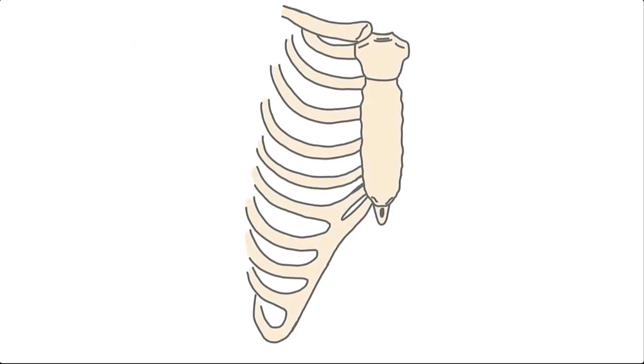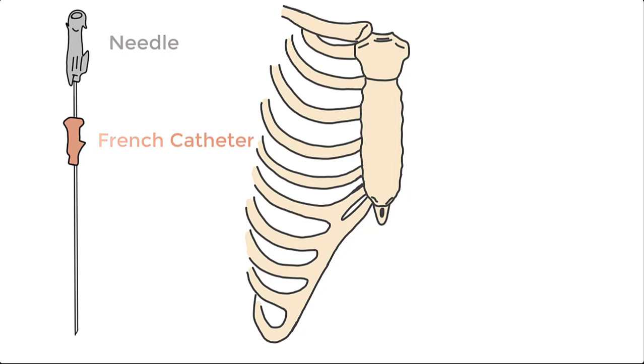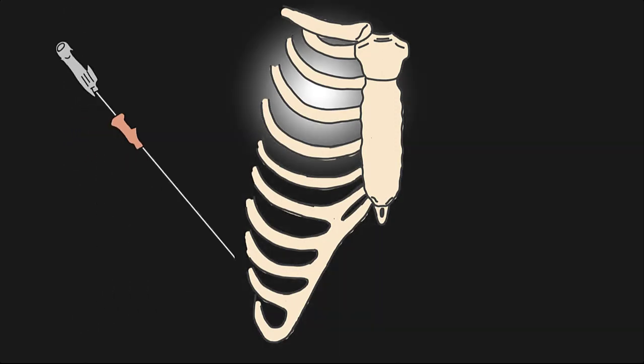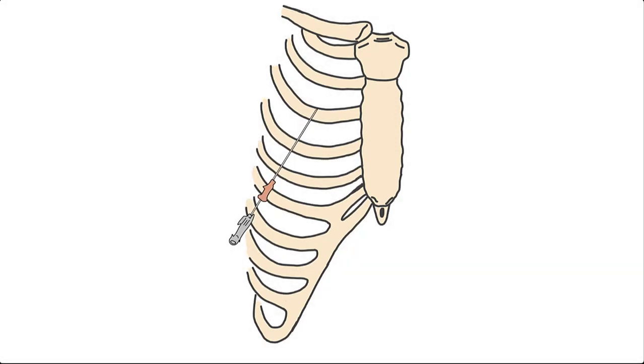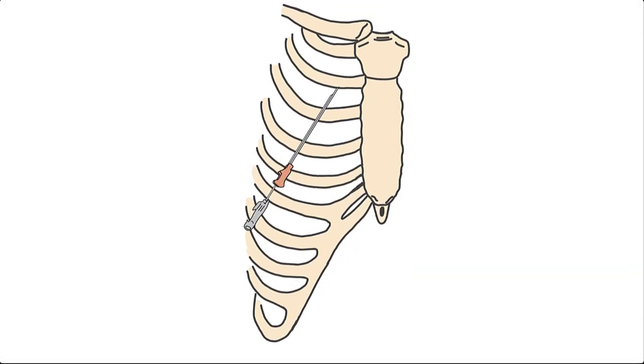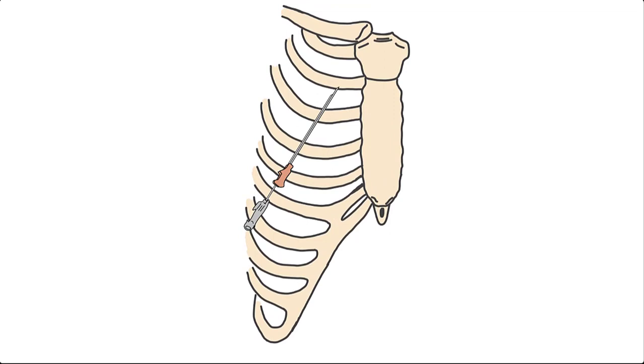In needle decompression, we insert a needle and French catheter large enough to traverse the chest wall at the second intercostal space at the midclavicular line. The needle is inserted slowly until a pop is felt followed by a decrease in resistance, representing the piercing of the pleura and entrance into the pleural space. Once the catheter is in place and needle is removed, air is manually aspirated using a syringe attached to a stopcock.